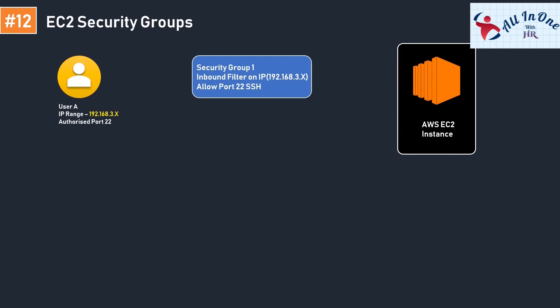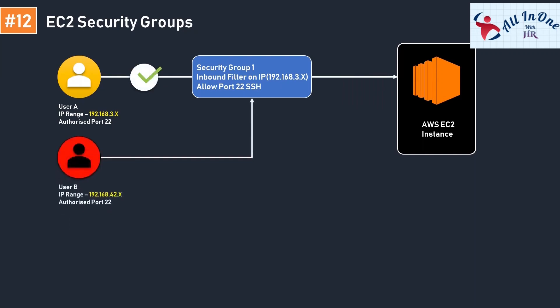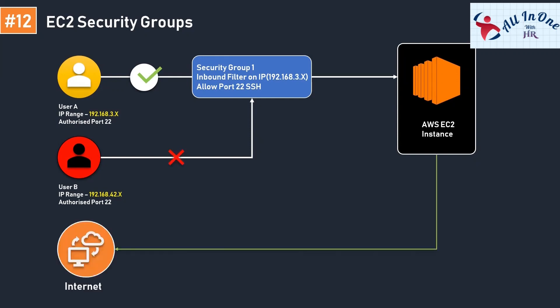A user who has authorized port 22 access and is within the allowed IP range will be able to SSH to the instance. However, a user not within the filter criteria will not be able to access the machine. By default, all outbound traffic is allowed by the EC2 instance and it can connect to the outside world freely without restriction — unless you specifically add a rule limiting what it can access.